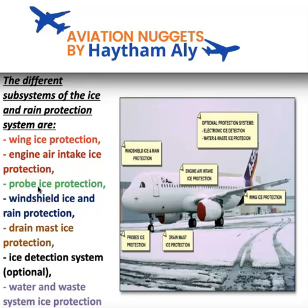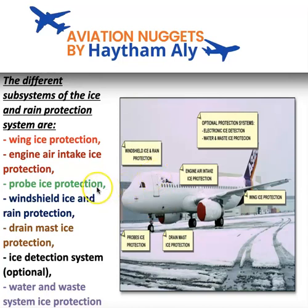We have three probe systems — captain probe, first officer probe, and standby probe — corresponding to the three air data inertial reference units. We have three probe heat computers controlling the heating for each set of probes: PHC 1 for the captain, and PHC 2 and 3 for the first officer and standby probes. The electrically heated probes include angle of attack sensors, pitot probes, static ports, and TAT (total air temperature) probes.